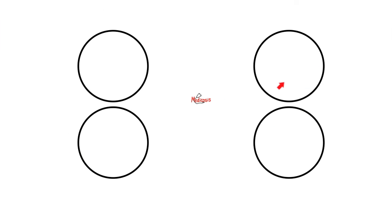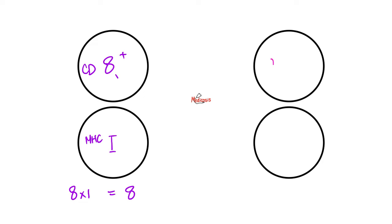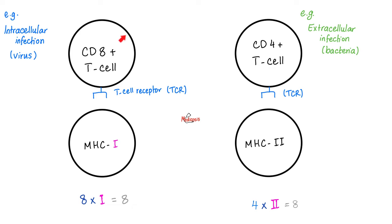Let's play this game. If this is a CD8 positive T-lymphocyte — it's 8 — it has to interact with MHC class 1 so that 8 times 1 equals 8. What if we're talking about CD4 positive? Then 4 has to interact with MHC class 2 so that 4 times 2 also equals 8. This is probably the oldest mnemonic in medical history. CD4 interacts with MHC 2; CD8 interacts with MHC 1.